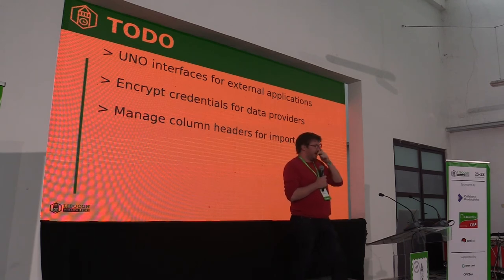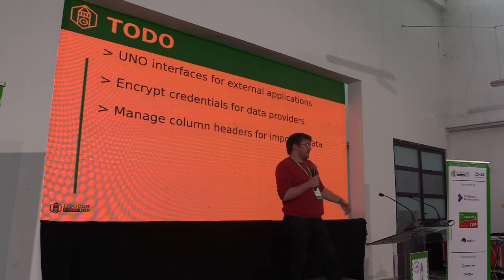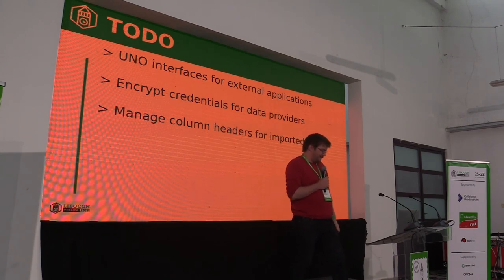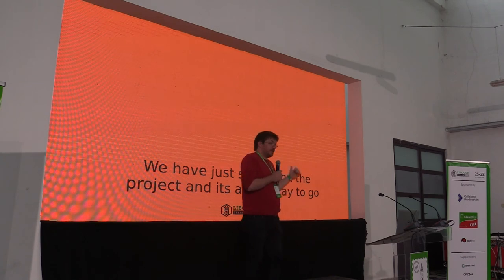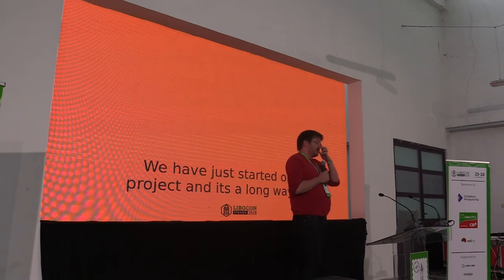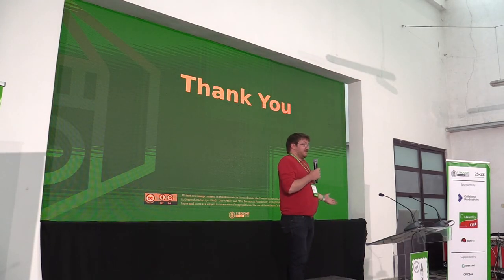One idea being worked on is how to address the data we have — specifically, the idea is to identify columns by their column headers rather than by position. Instead of saying 'it's the third column,' you could specify the column by its header name. We are still working on making the user interface usable, so that maybe for version 6.2 or 6.3 we might have all these things ready. Any questions about this project?